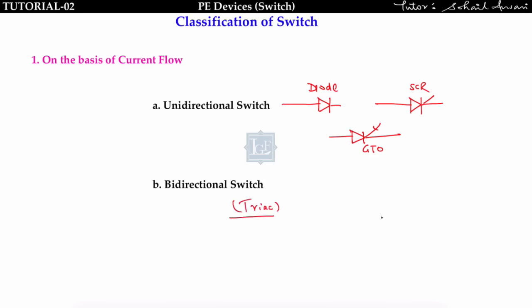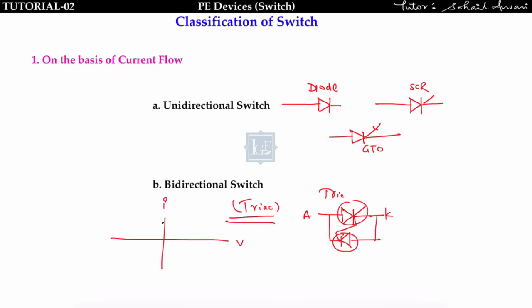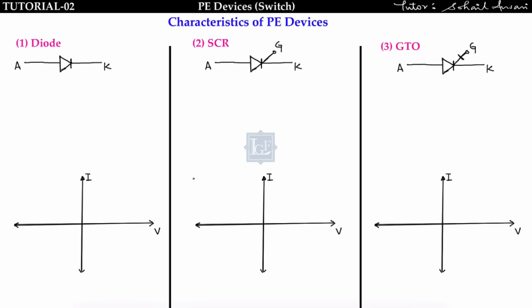The third classification is by current flow: unidirectional and bidirectional. Unidirectional switches allow current in only one direction — examples include diode, SCR, and GTO. Bidirectional switches allow current in both directions. Example: TRIAC — two thyristors connected back to back. When V_MT1 > V_MT2 one thyristor conducts, when V_MT2 > V_MT1 the other conducts, allowing current in both directions.